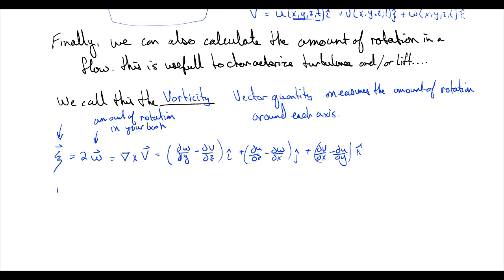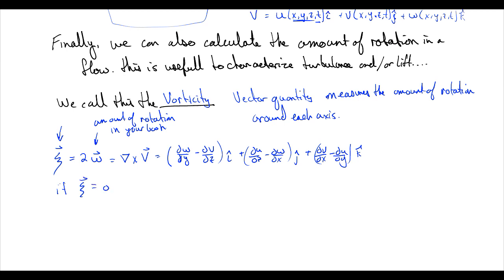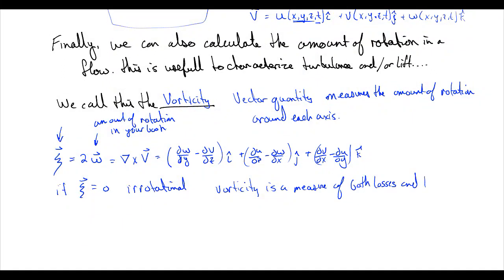So if this quantity, if our vorticity is equal to zero, then flow is called irrotational. This greatly simplifies the analysis of some flows because vorticity is a measure of both losses and things like lift and drag. So an airplane wing adds vorticity to the air as it flies through and it's one of the consequences of generating lift. But also, viscous flows generate vorticity.